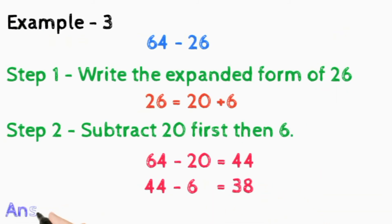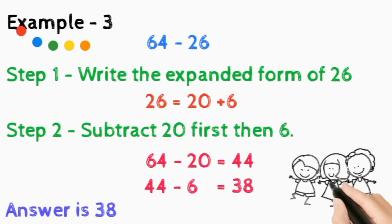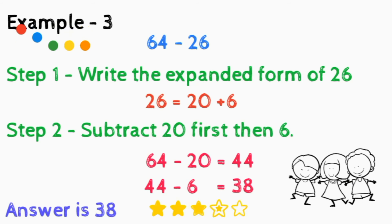In step 1, firstly we write the expanded form of 26, that is 20 plus 6. In step 2, subtract 20 first then 6. 64 minus 20 that is 44, and 44 minus 6 that is 38.